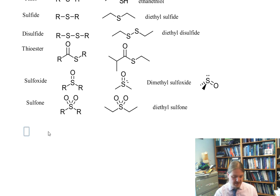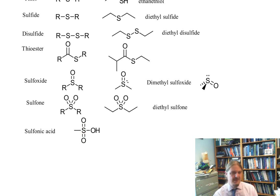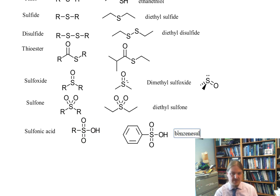We can increase the oxygen content further and have sulfonic acids. These sulfonic acids tend to be fairly strong acids, not unlike sulfuric acid — pretty similar to sulfuric acid, and depending on the functional group attached, maybe a little bit weaker or a little bit stronger. Here is an example: benzene sulfonic acid.